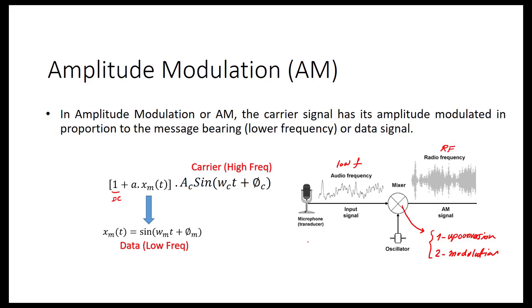xM(t) is our audio signal — the message or data. We multiply this by the amplitude of the carrier. Now the amplitude of the carrier is not constant; it is changing. If xM is a sine wave sin(ωM·t + φM), then ωM is a low frequency and ωC is a high frequency. This means the amplitude of the carrier changes, and we call the output xAM — this is the output of AM modulation.